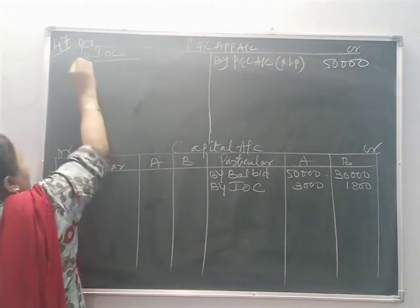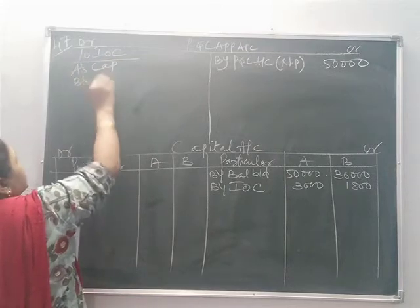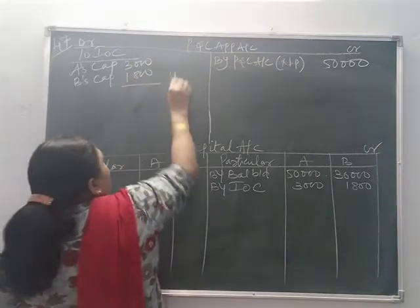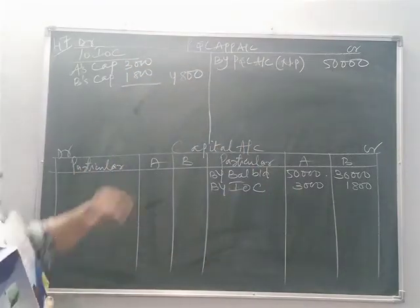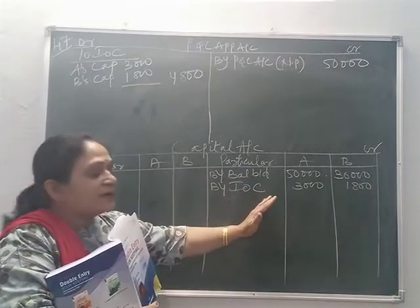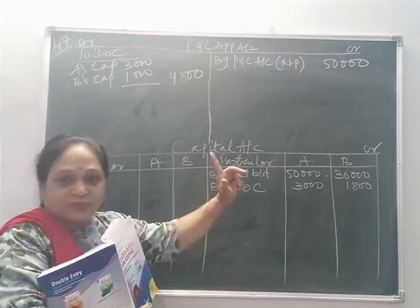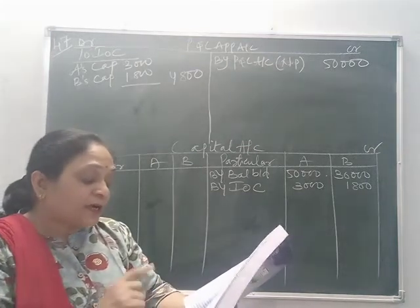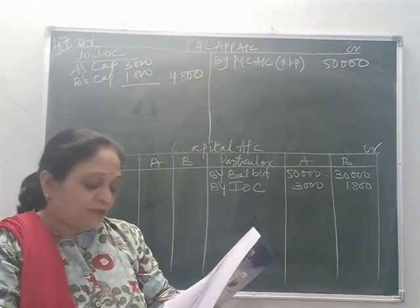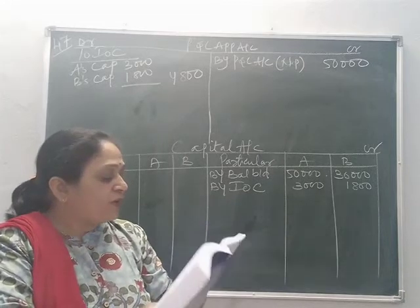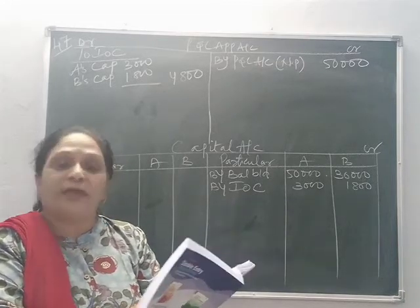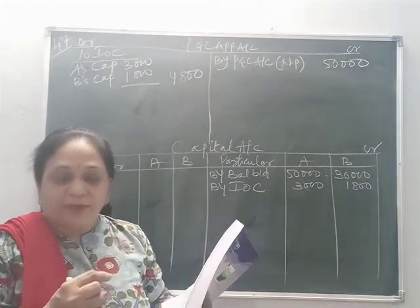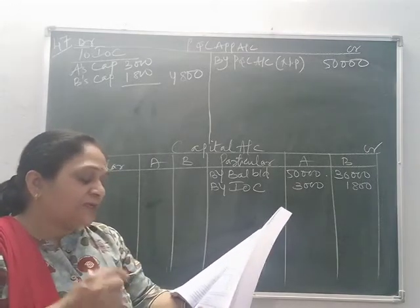Interest on capital — A's capital and B's capital: 3,000 and 1,800, totalling 4,800. Debit to P&L appropriation, credit to the partners' capital accounts. Then A will get a commission of 2% on turnover. Drawings of the partners are provided, and the turnover is 3,00,000. Turnover means sales. So A will get a commission of 2% on 3,00,000.